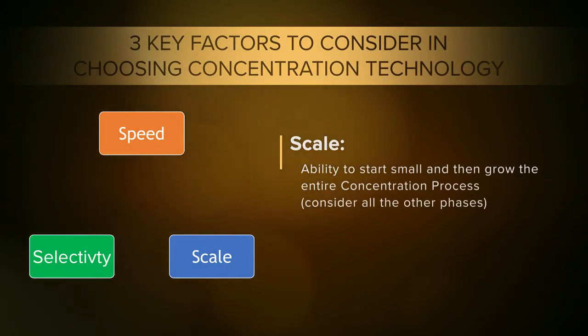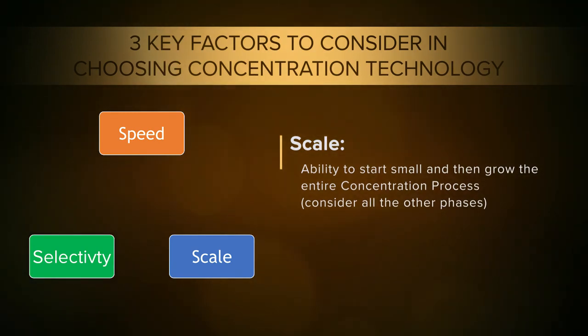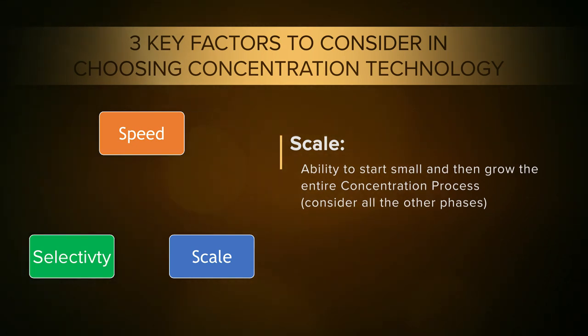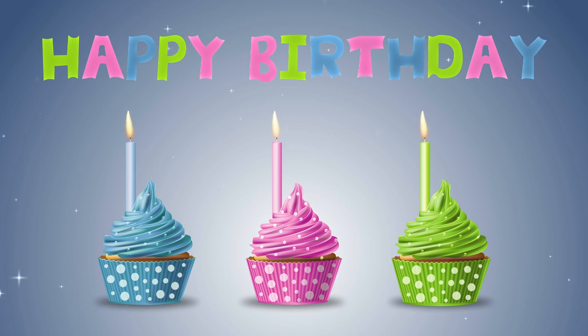The second S is scale — how easy it is to scale. Extraction in the cannabis industry started off small because it wasn't legal in all states. People were doing it in a kitchen, making medical products for family or people they knew. Things done on a small scale are possible, but if you want to make cupcakes for a birthday party versus cupcakes for the city of New York, that's a whole different process — you can't make them all in one little kitchen.